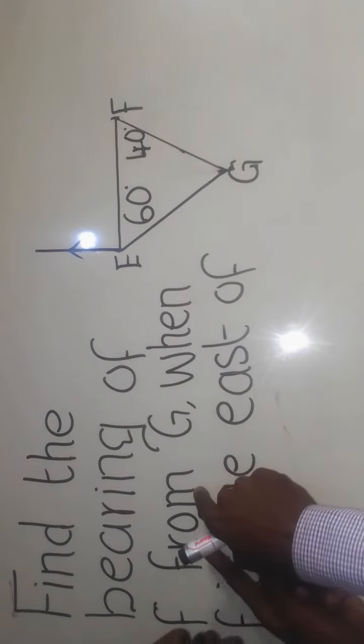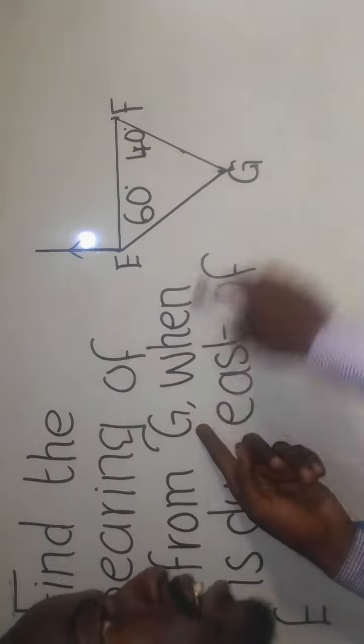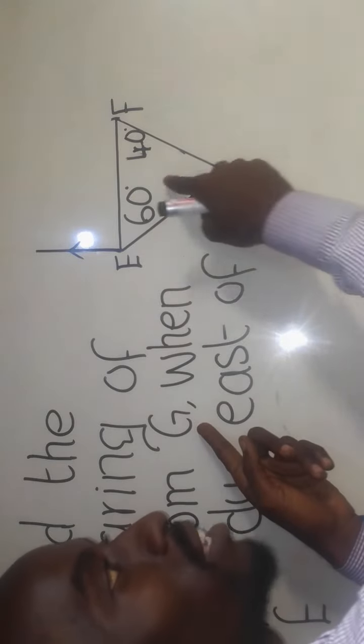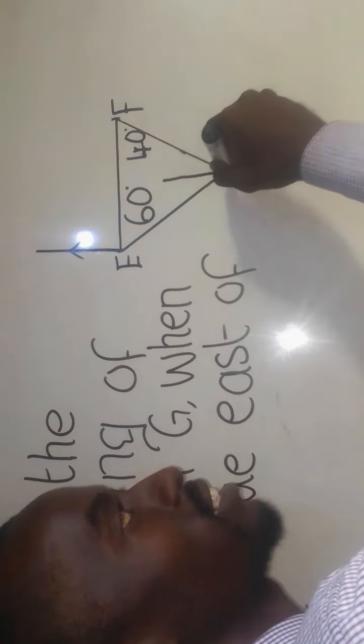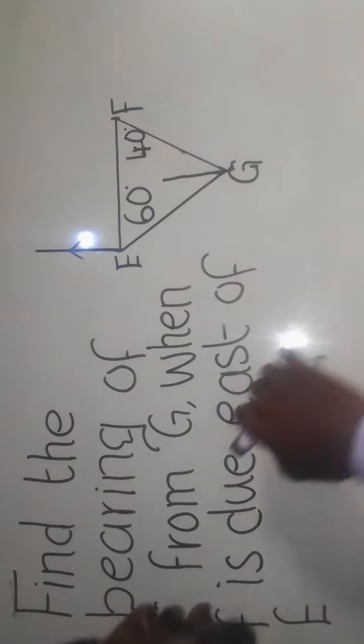So you go to where G is here, so this is point G. Are we given the north here? No, you are supposed to draw your north line like this that points to F.